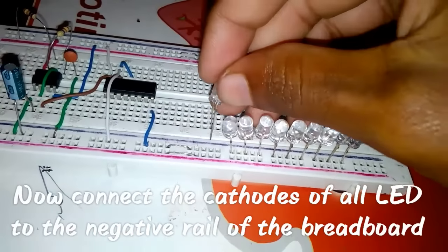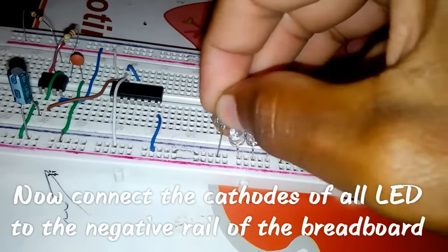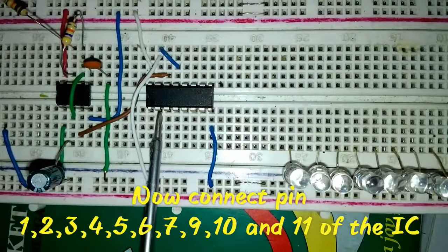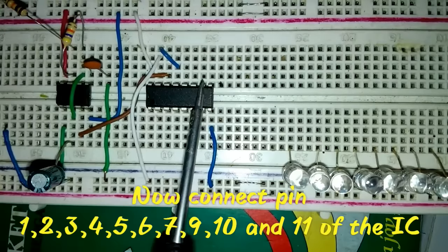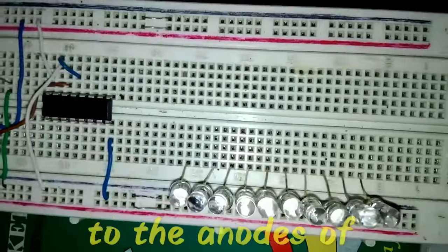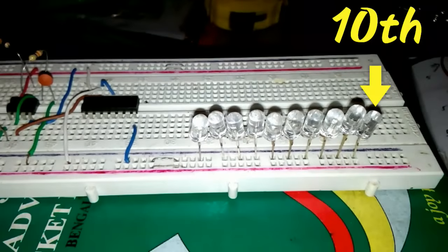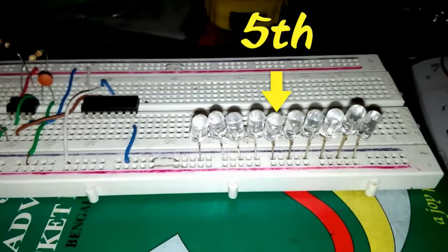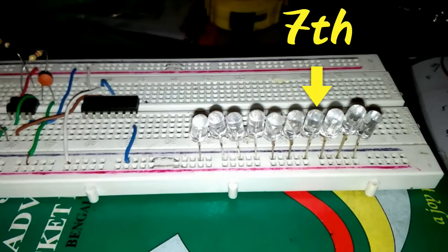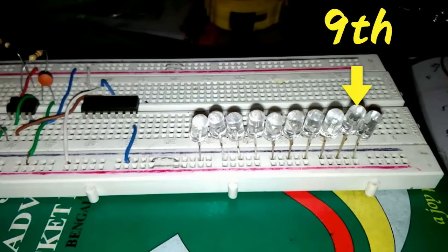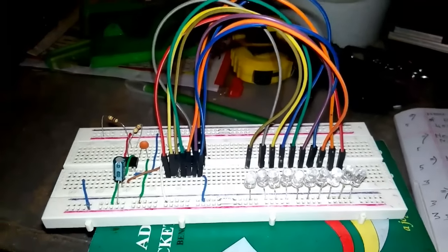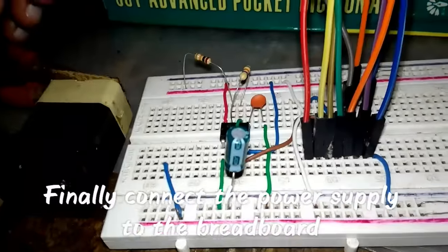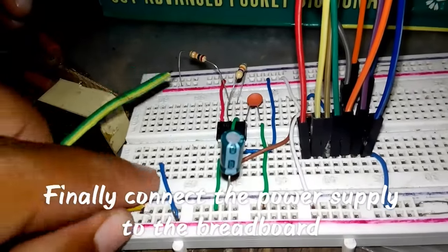Now connect the cathodes of all LEDs to the negative rail of the breadboard. Connect the anodes to the respective output pins of the 4017 IC. Finally connect the power supply to the breadboard.